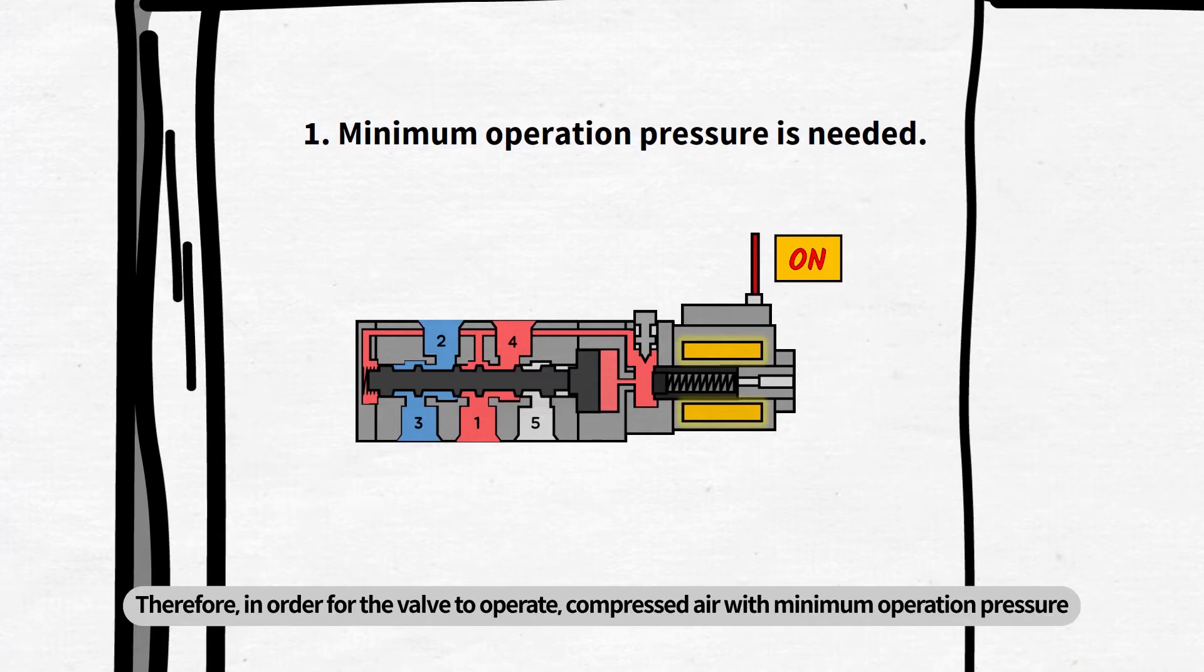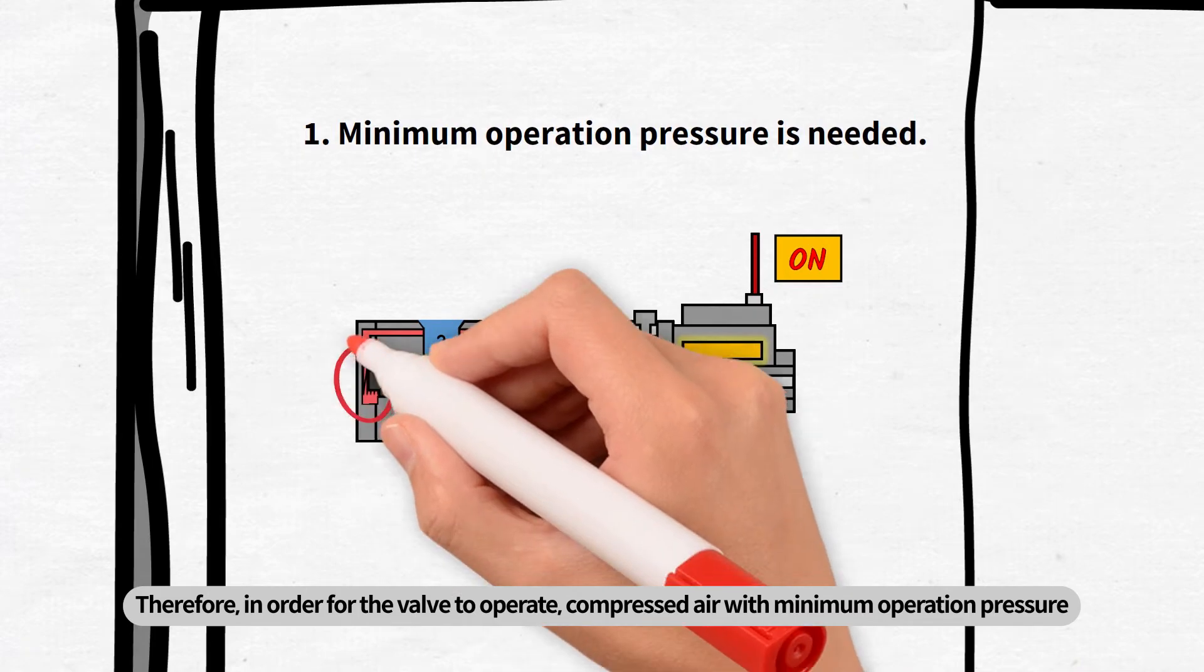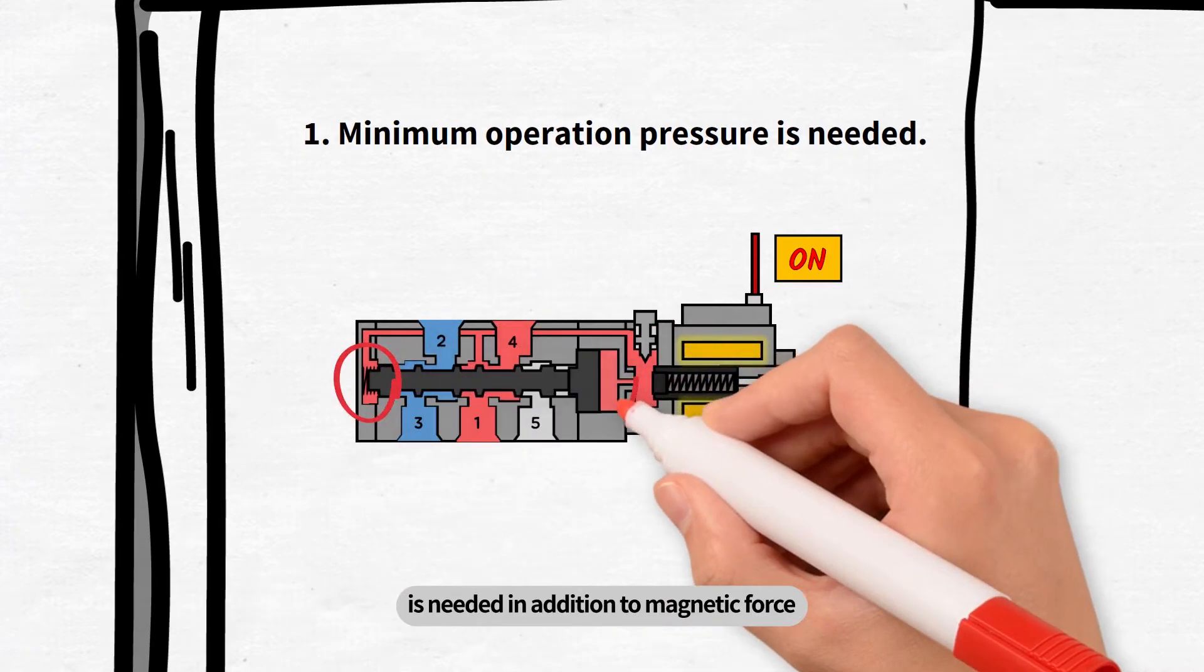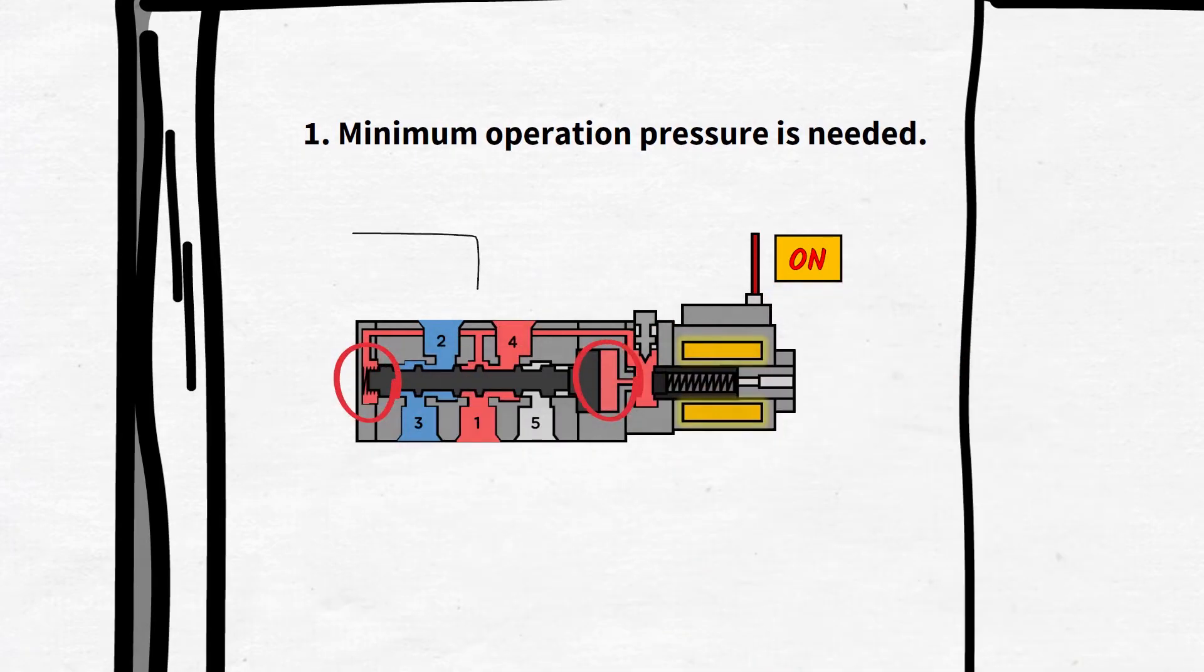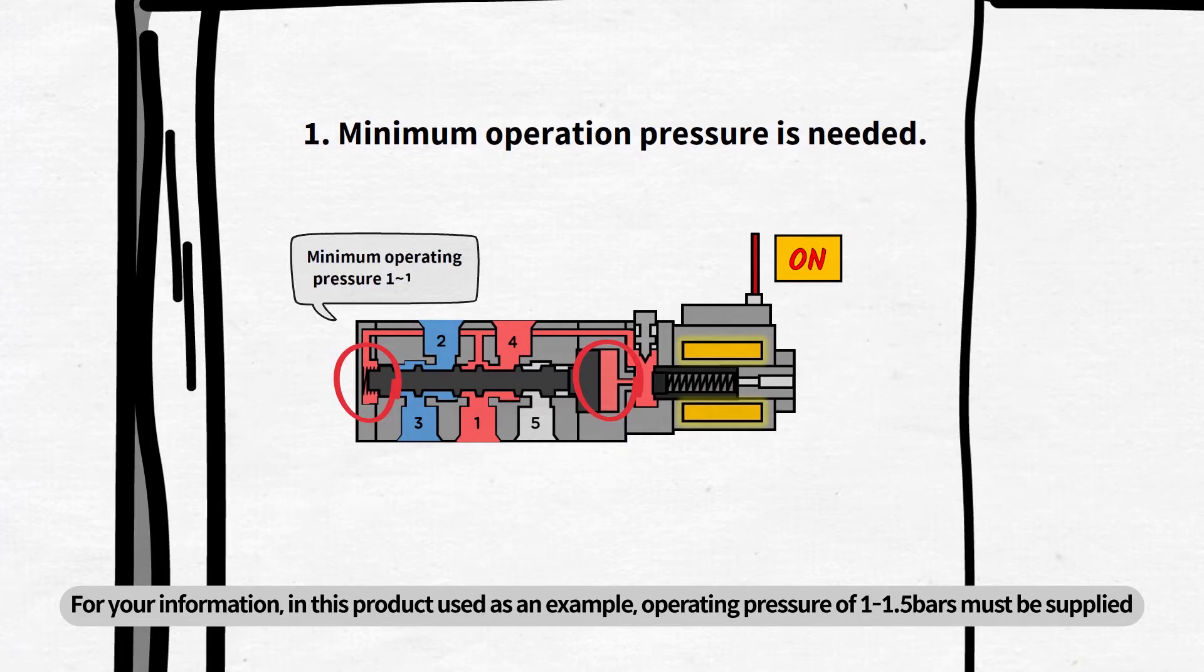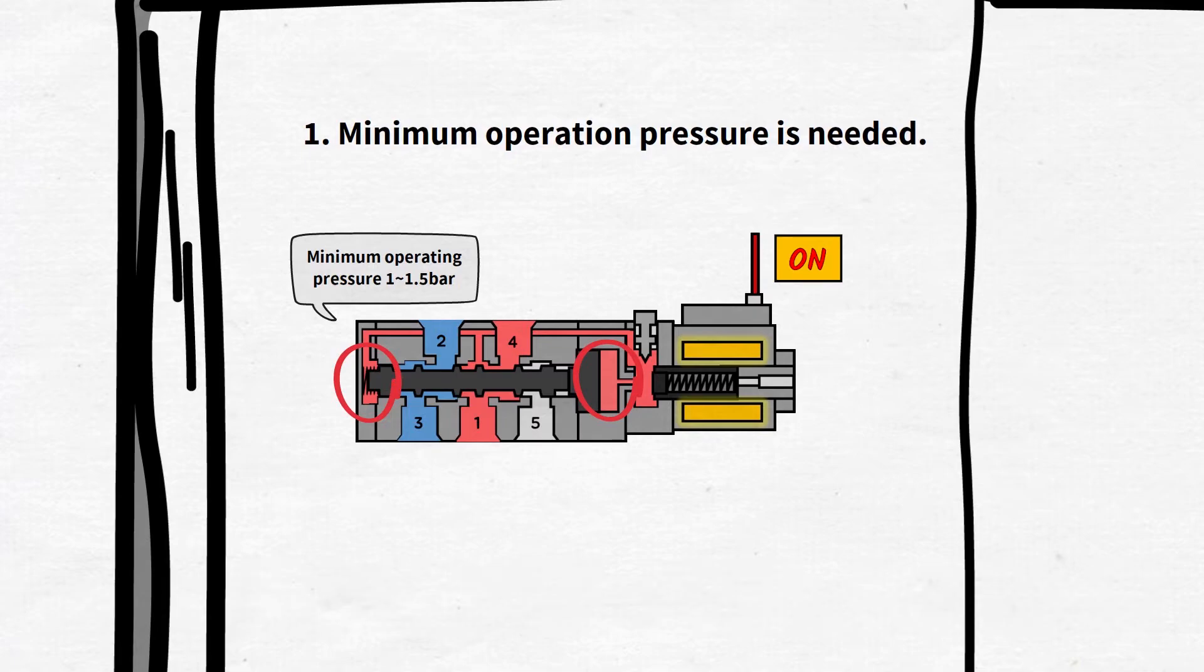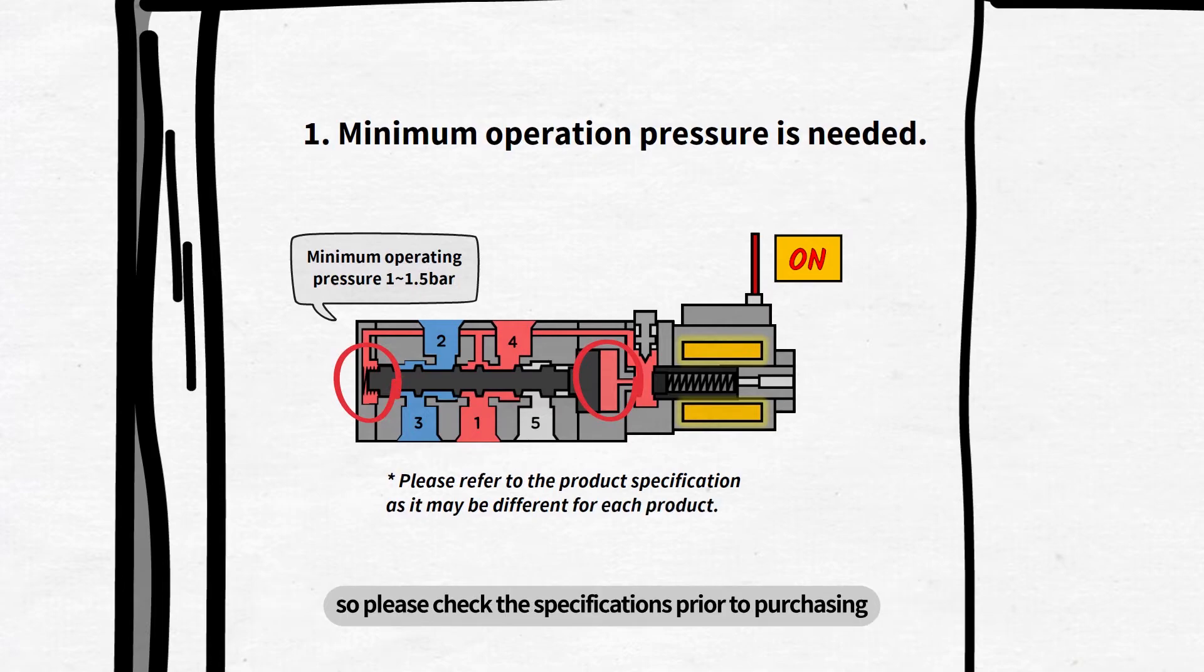compressed air with minimum operation pressure is needed in addition to magnetic force. For your information, in this product used as an example, operating pressure of 1 to 1.5 bars must be supplied. The minimum operation pressure for each product may be different, so please check the specifications prior to purchasing.